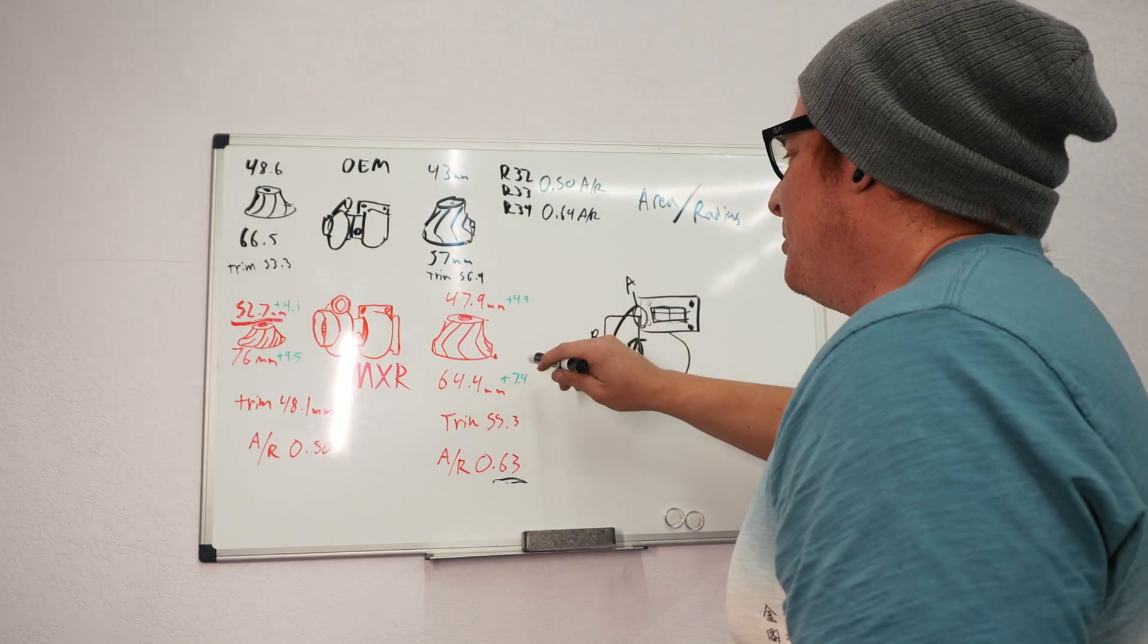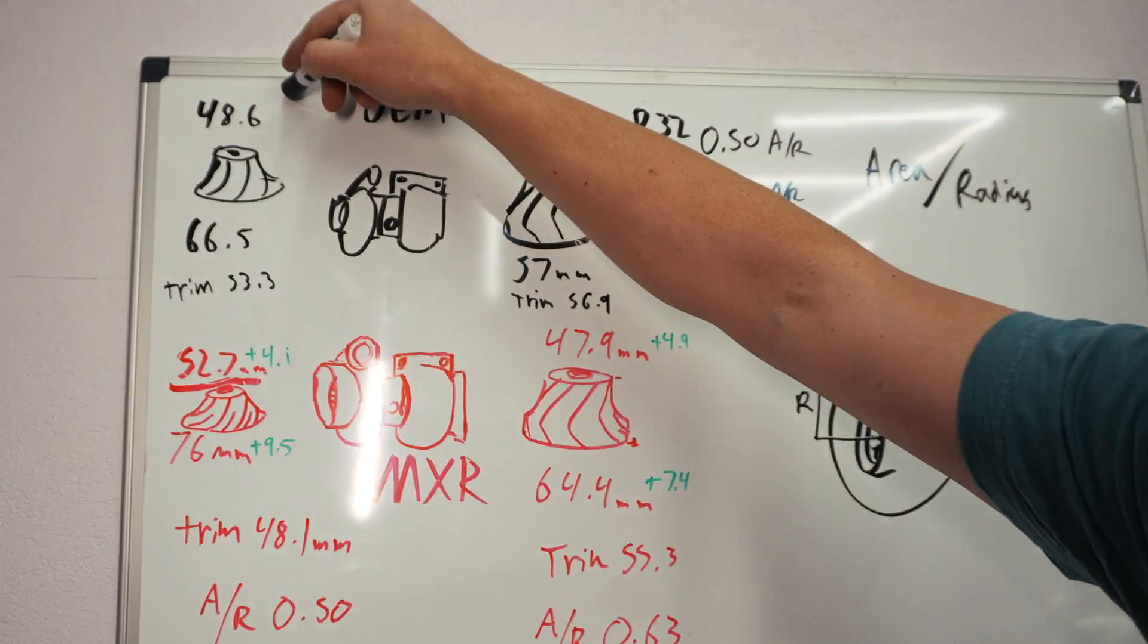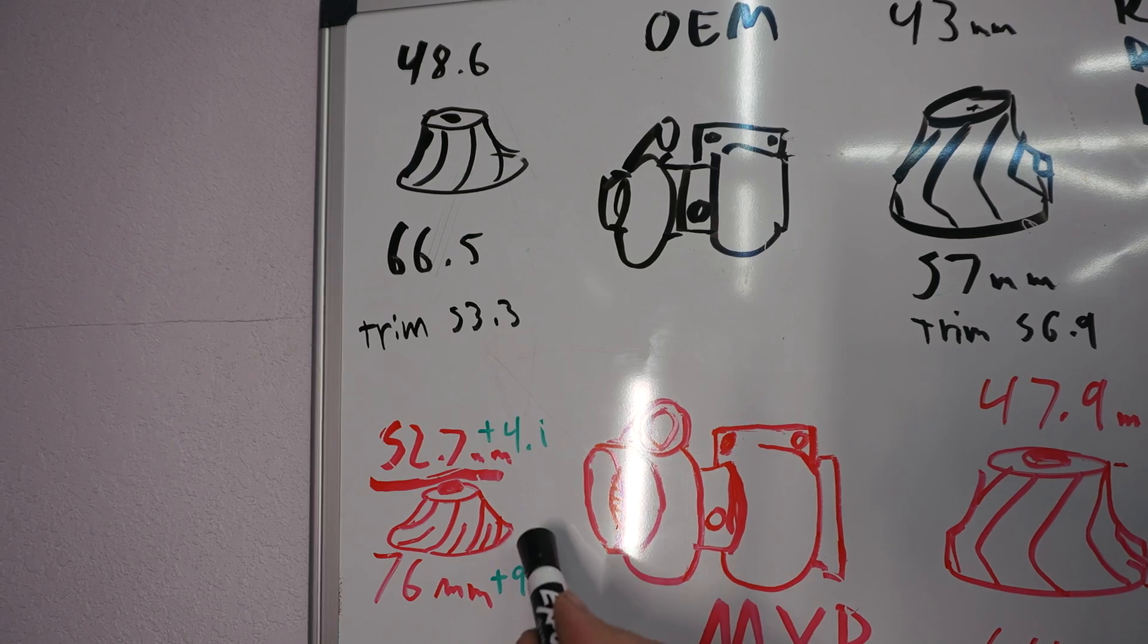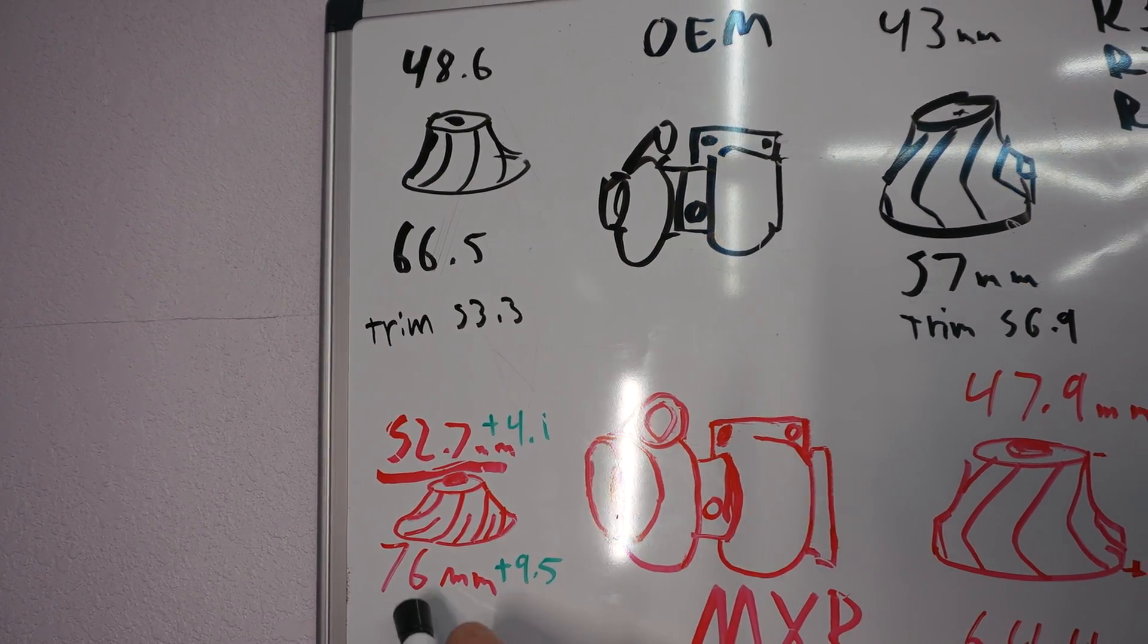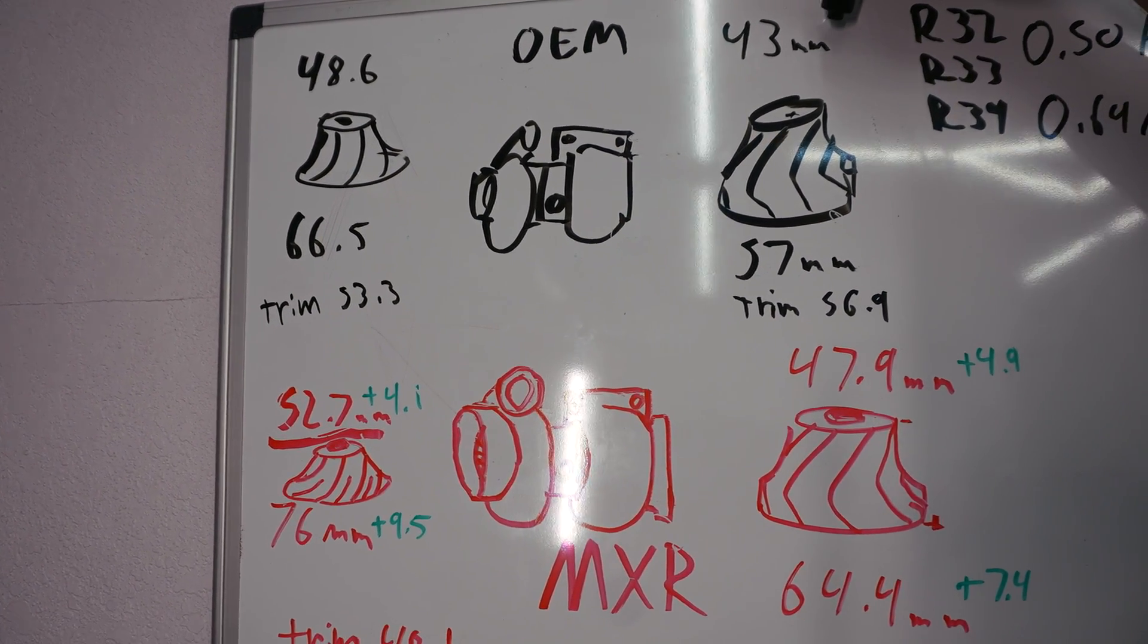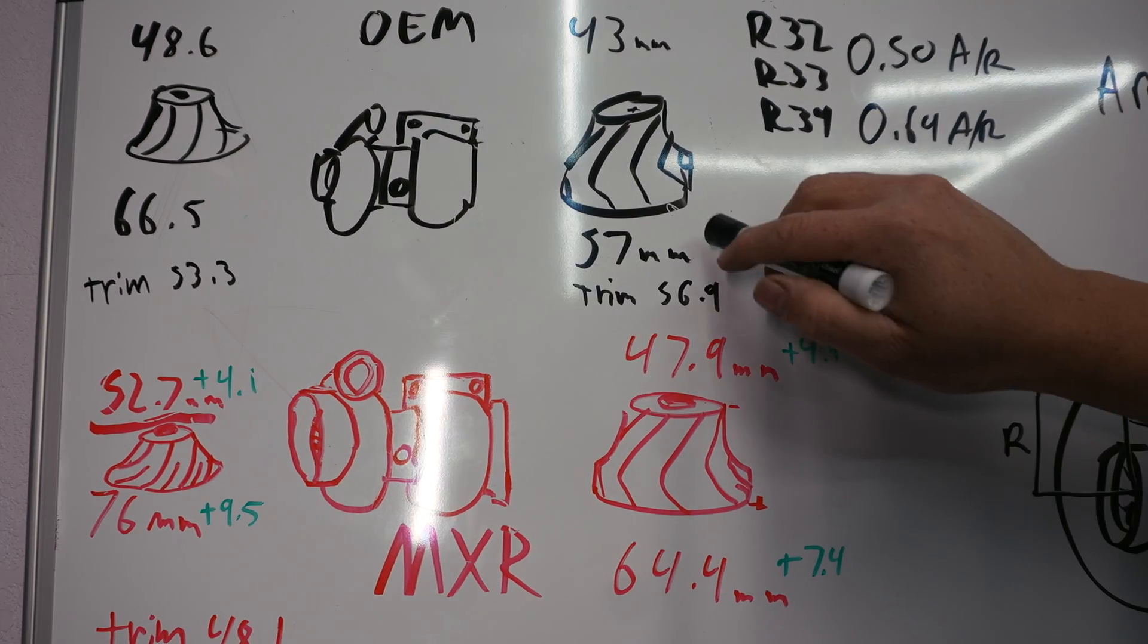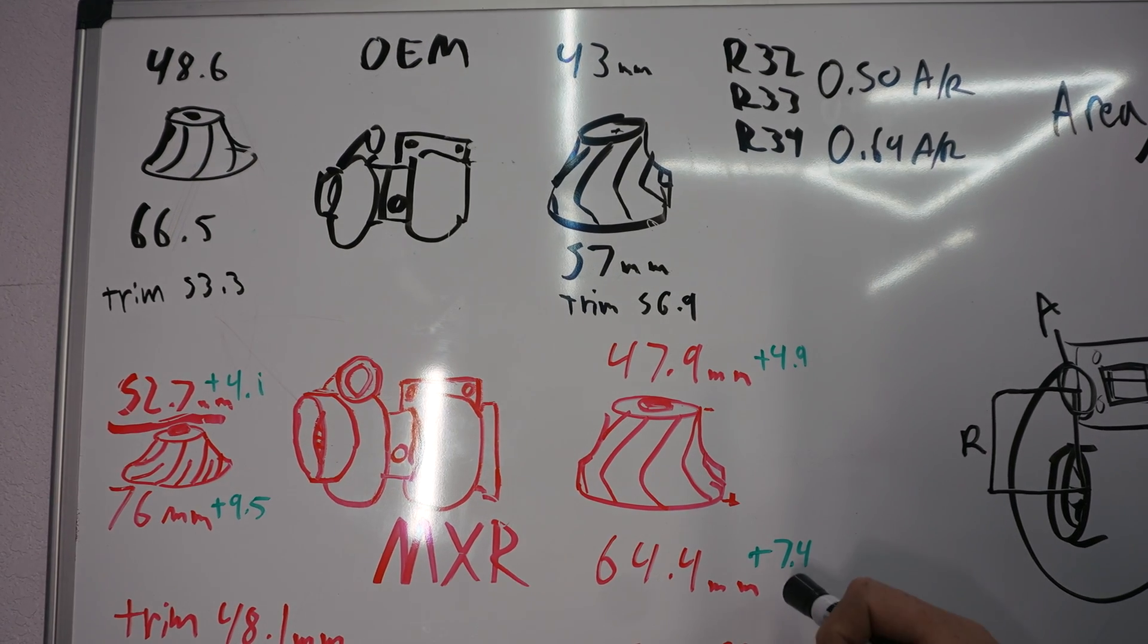So with regards to comparing the stock turbo and the Max Speeding Rods turbo, on the compressor we have a 48.6 mil compressor on the stock turbo and a 52.7 millimeter inducer on the Max Speeding Rods turbo - that's an increase of 4.1 millimeters. On the exducer, the stock one was 66.5 versus the MXR turbo at 76 millimeters - that's the biggest increase here at 9.5 millimeters. On the turbine, the stock one was 43 on the exducer, the MXR one is 47.9, an increase of 4.9 millimeters. And then on the inducer on the turbine, 57 millimeters versus 64.4 on the Max Speeding Rods turbo, an increase of 7.4.